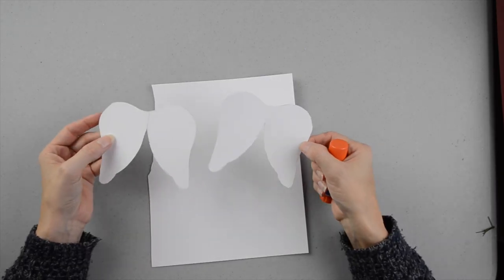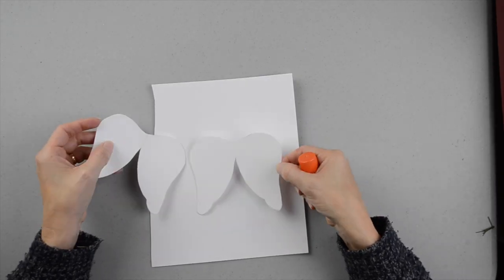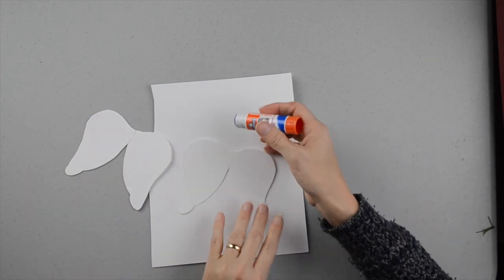So now that I have both of my pairs of wings cut out, I'm going to take my glue stick and glue them together.